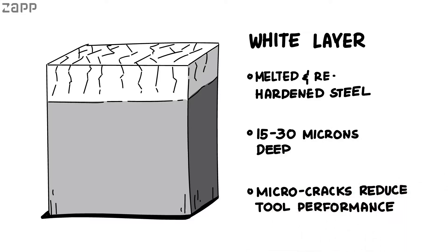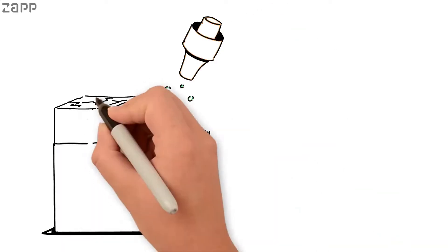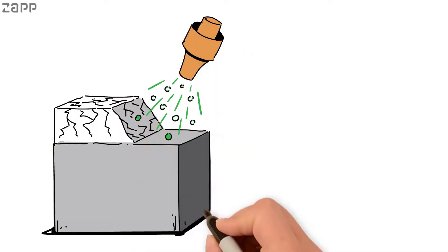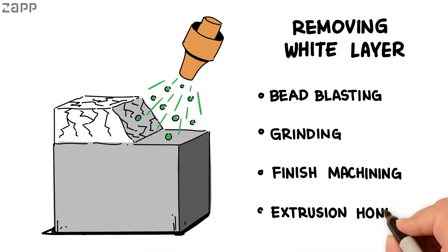Removing the white layer is critical to maximizing tool life. White layer is often 50 to 30 microns in depth after the initial rough cut. Bead blasting, grinding, and final machining are all proven ways of mechanically removing white layer.